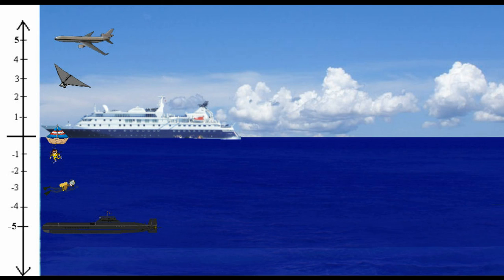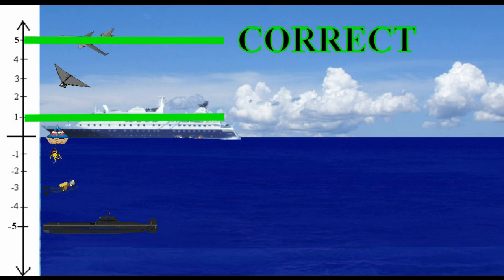Now let's practice. For this activity, we will replace the term 'greater than' with 'higher than.' Question one: which is higher, a cruise ship at positive one or an airplane at positive five? The answer, of course, is an airplane at positive five.